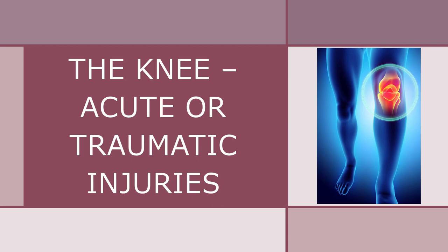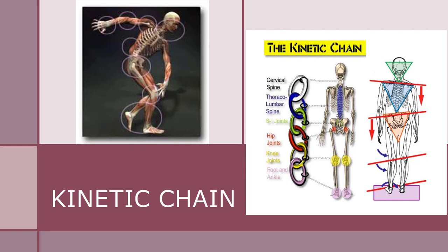The knee — acute or traumatic injuries. The kinetic chain is directly affected by motions and forces occurring at the foot, ankle, lower leg, thigh, hip, pelvis, and even the spine. With the kinetic chain, forces must be absorbed and distributed. If the body is unable to manage forces, breakdowns occur to the system. The knee is very susceptible to injury resulting from absorption of forces.